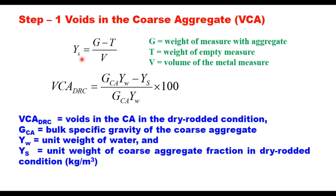The unit weight of the coarse aggregate fraction in dry-rodded condition, Ys, is calculated as (G − T) / V, where G is the weight of the measure with aggregate, T is the weight of the empty measure, and V is the volume of the metal measure. Then VCA in dry-rodded condition is: (GCA × γw − Ys) / (GCA × γw), where GCA is the specific gravity of the coarse aggregate and γw is the unit weight of water.